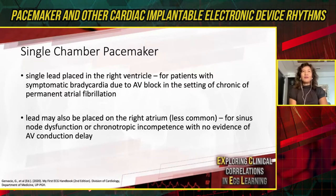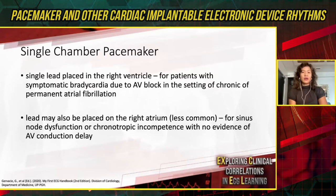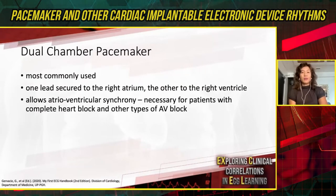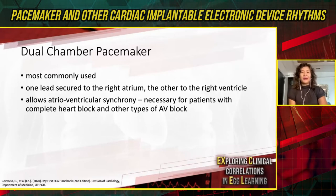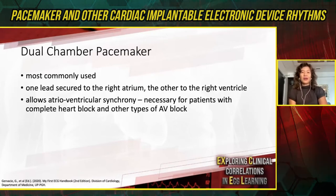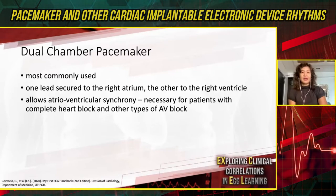When we talk of types of pacemakers, there are basically three types: single-chamber, dual-chamber, and triple-chamber. The single-chamber pacemaker has one lead attached either to the right atrium or the right ventricle. A dual-chamber pacemaker has leads attached to both the right atrium and right ventricle. The triple-chamber pacemaker is used in CRT — cardiac resynchronization therapy — with leads into the right atrium, right ventricle, and into the coronary sinus to pace the left ventricle.